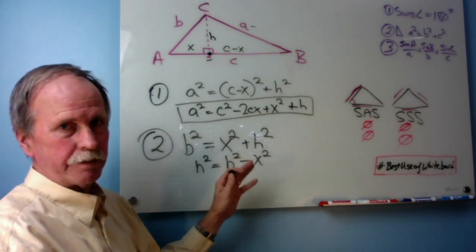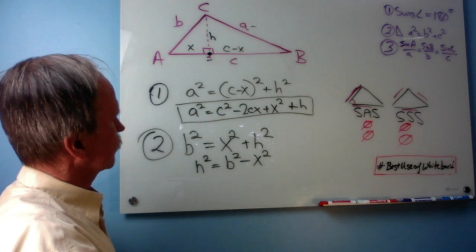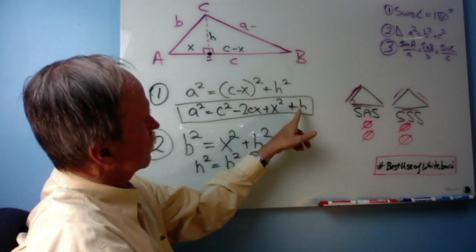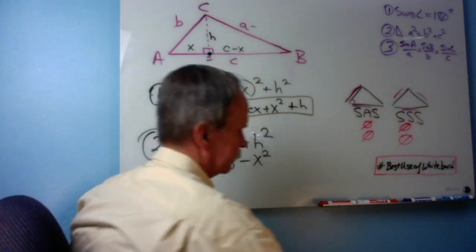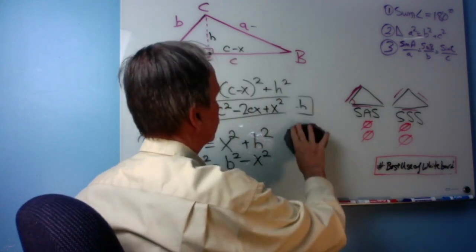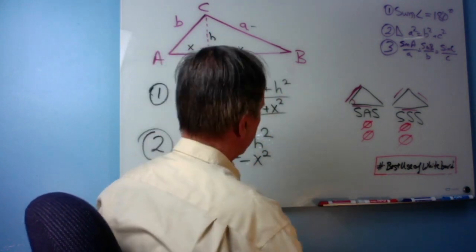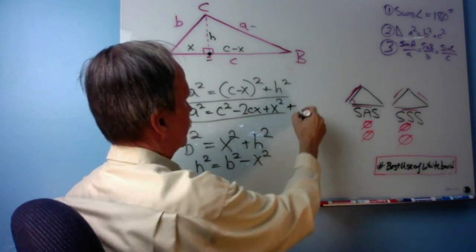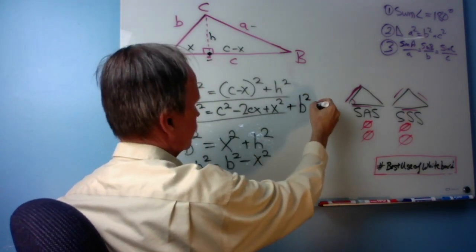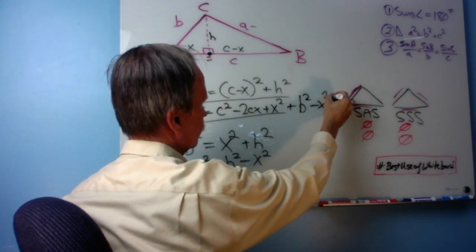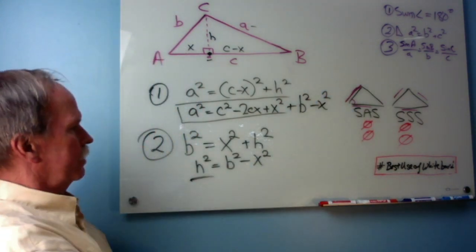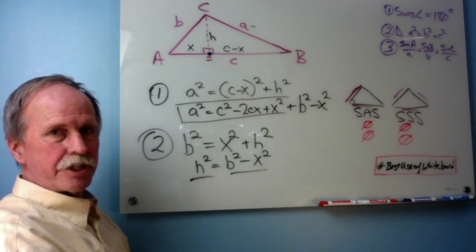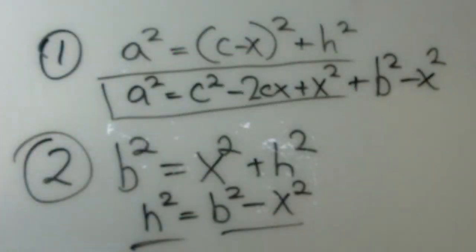So, let's go up here and get rid of this H. And instead of adding H squared, let's add B squared minus X squared. Because we already proved that that equals H squared. Let's go see where we are now.